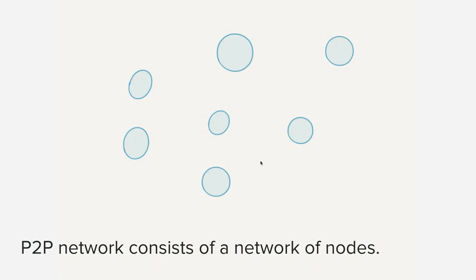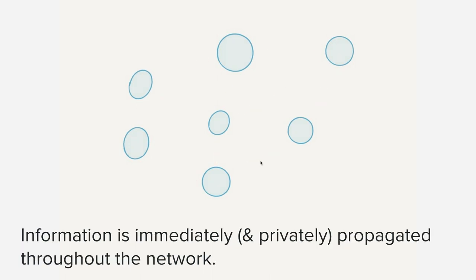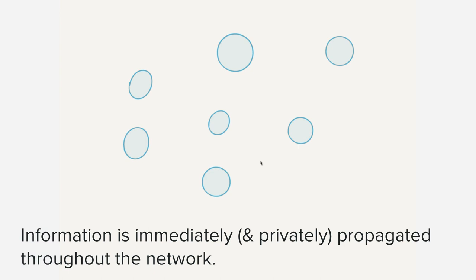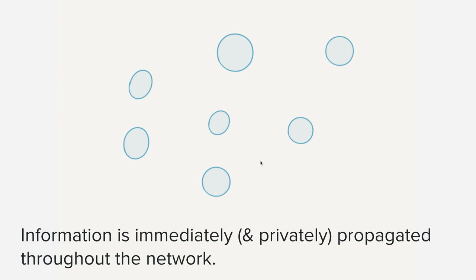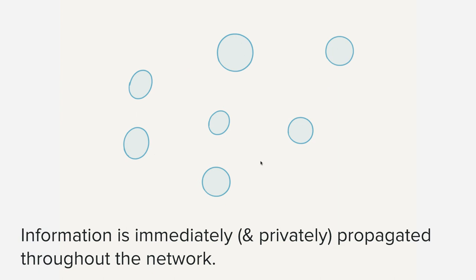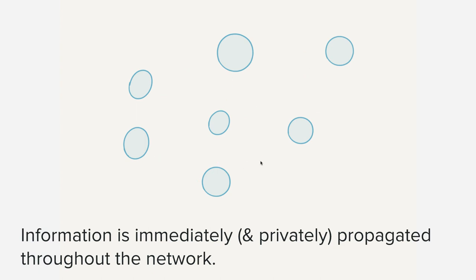Peer-to-peer networks are something we've seen in the past. A peer-to-peer network is basically a network of nodes, where each node is like a different computer in the network or a different server within it. When we add information into that network, the idea is that it is immediately — and privately — propagated throughout the network. This might be seen in file sharing, which is one of the first ways many of us heard about peer-to-peer networking, through technologies like Napster, Kazaa, or BitTorrent, where people would add a file and it would propagate that information across computers.